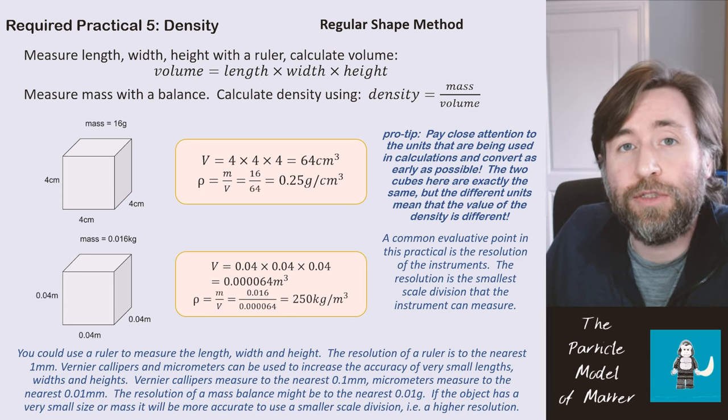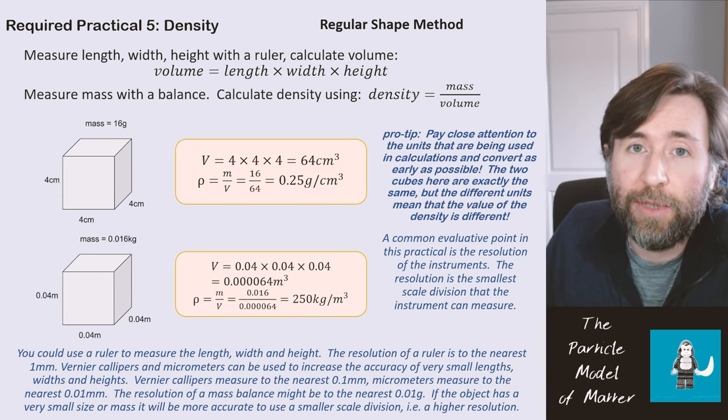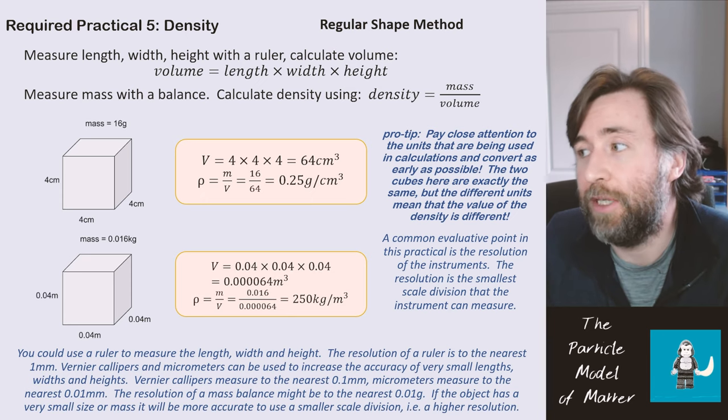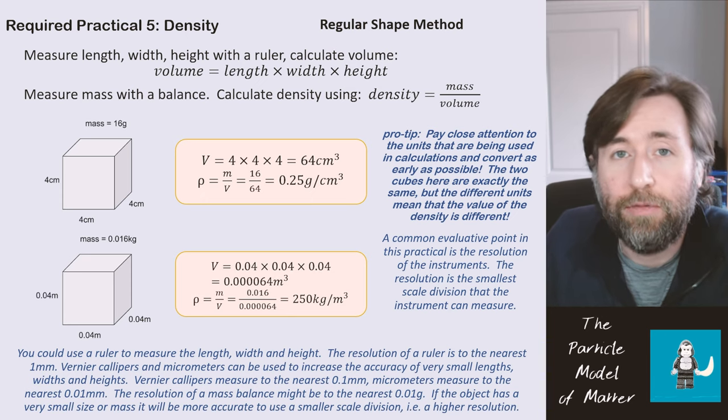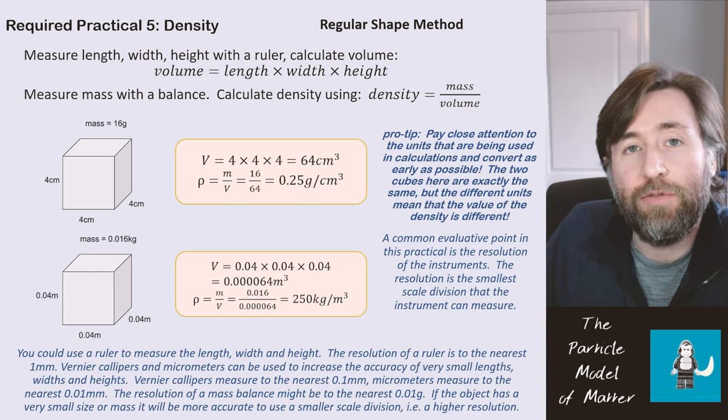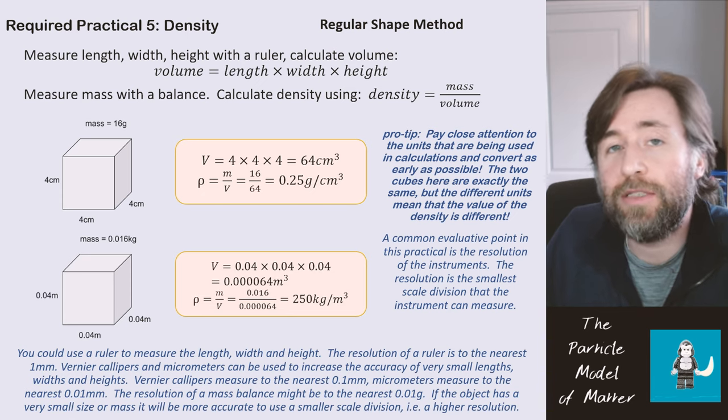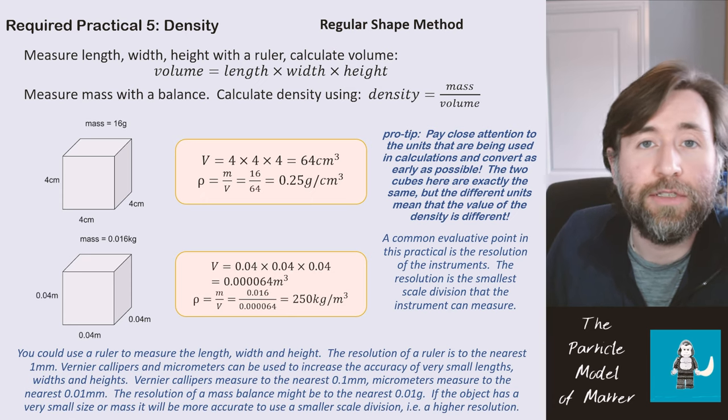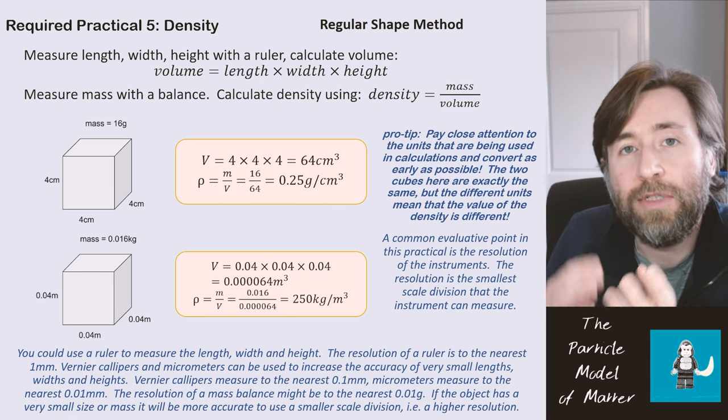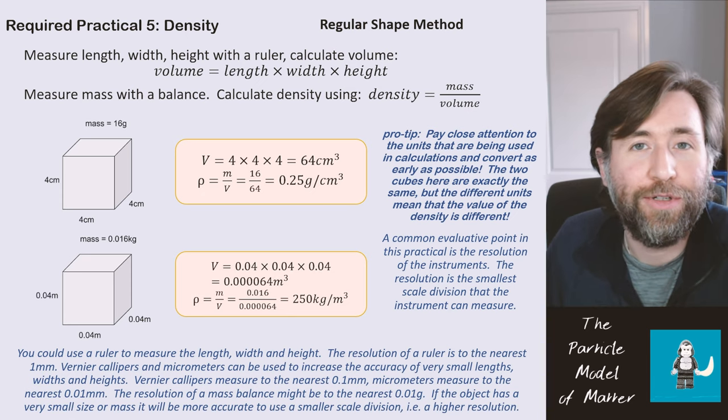Similarly, they may discuss the resolution of the mass balance. Most mass balances can measure to 0.01 grams. But perhaps the mass balance you've been given has a lower resolution than that. That could be one evaluative point you could make. If you were dealing with a cube of very small mass, you might want a higher resolution. But if you're dealing with a very large cube of a mass around a kilogram, perhaps you don't need to measure to 0.01 grams.